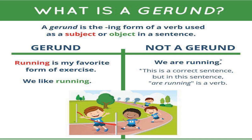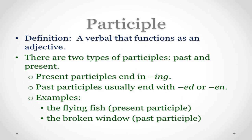Once you practice some worksheets, these will become clearer. Let us come to participle. A participle is a verbal that functions as an adjective. There are two types of participles — past and present. Present participle ends in ing, but past participles usually end with ed or en. For example, 'the flying fish' — flying is a present participle. 'The broken window' — broken ends in en and is a past participle. It acts as an adjective: 'broken' describes the window and 'flying' describes the fish.